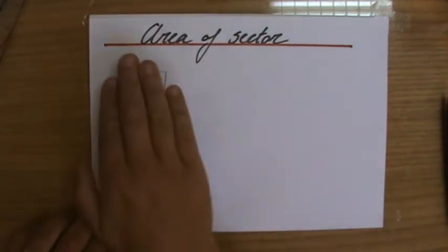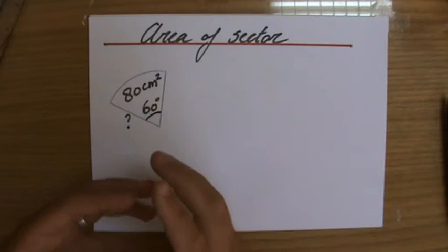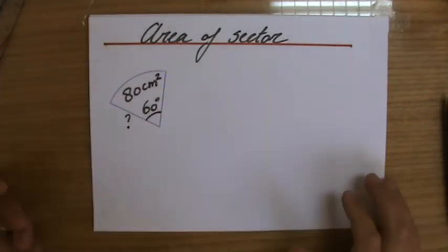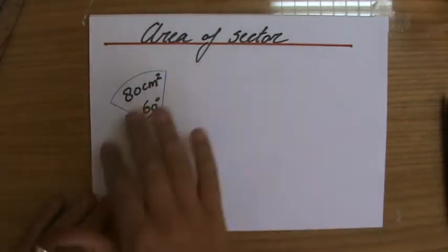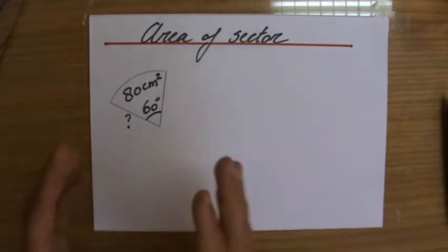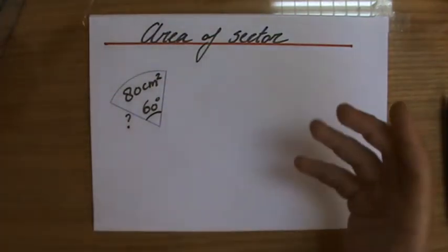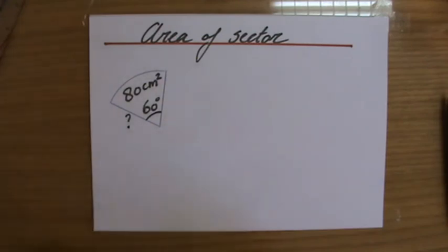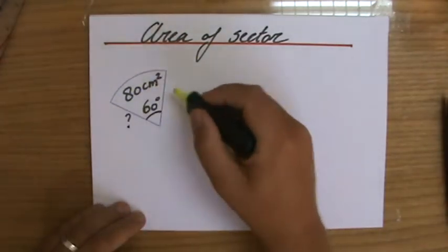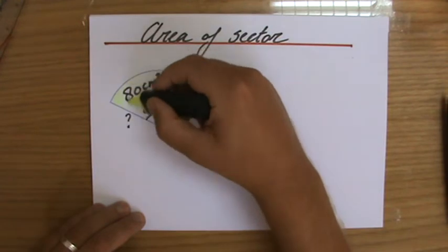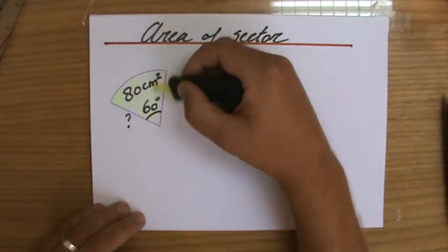With areas of sectors, they can make these questions as interesting as they want. This is a really nice question where they only actually give you a part of a circle and tell you the area of this sector is 80 centimeters squared.